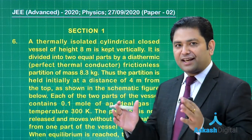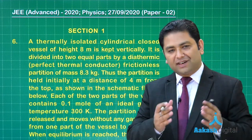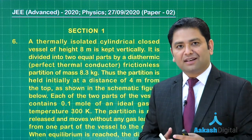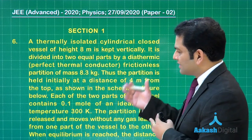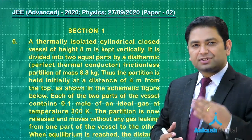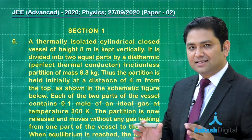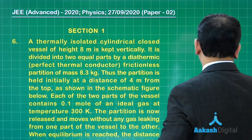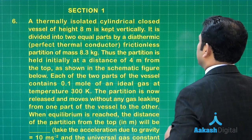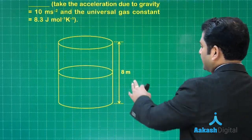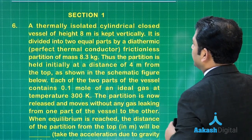Moving to the next question — again a calculation-heavy one. In examination hall, back-to-back questions demanding lots of calculation should never demotivate you; just scan forward to find where your strength lies. The question: there is a thermally isolated cylinder, a closed vessel of height 8 meters, divided into equal parts by a diathermic frictionless partition of mass 8.3 kg.